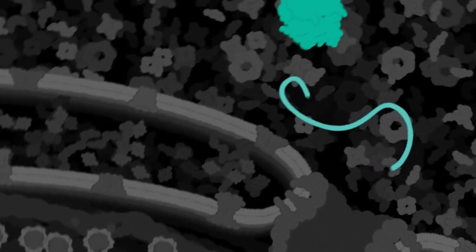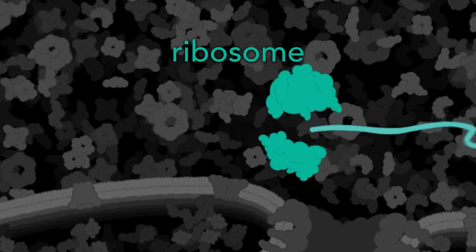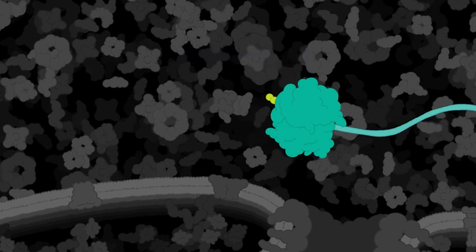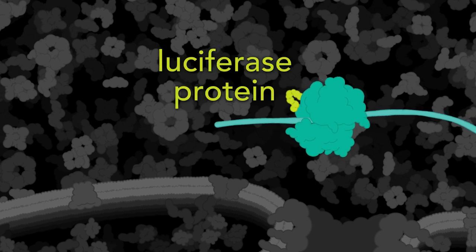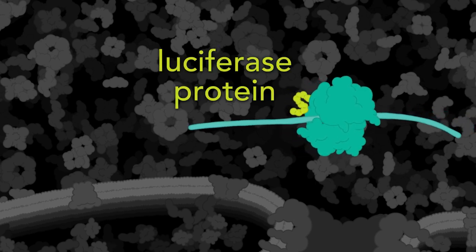The mRNA attaches to a ribosome, the cell's protein-making machinery. The ribosome reads the molecular code of the mRNA to build a luciferase protein, one amino acid at a time.